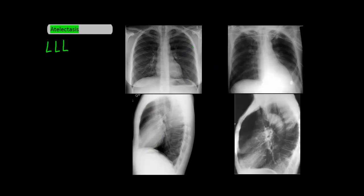Lastly, we have the left lower lobe. On the PA, the normal left lower lobe is here. Left lower lobe atelectasis looks like right lower lobe atelectasis, but just on the left side — the left lower lobe collapses downwards. Like right lower lobe atelectasis, the left heart border should remain visible because the left heart is not in contact with the left lower lobe. You'll also see the left diaphragm showing the silhouette sign. On the lateral, the oblique border shifts down and out, which is pretty much the same as right lower lobe atelectasis.